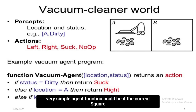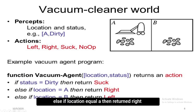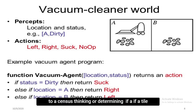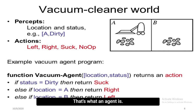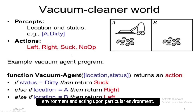A very simple agent function could be: if the current square is dirty, then suck up the dirt; otherwise, move to the other tile. In simple terms: if the status is dirty, return suck; else if location equals A, return right; else return left. If a tile is dirty, the vacuum cleaner will suck up the dirt then move on. If tile B is clean, it will simply move on. The vacuum cleaner is perceiving its environment through sensors, determining if a tile is clean or not, making a decision, and using its suction as an actuator to act upon the environment. That is what an agent is — a very clear example of how an agent perceives from the environment and acts upon it.